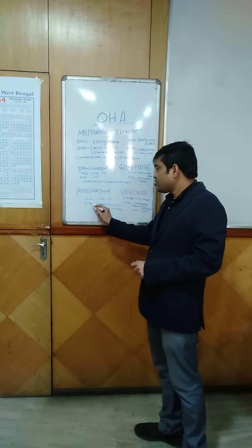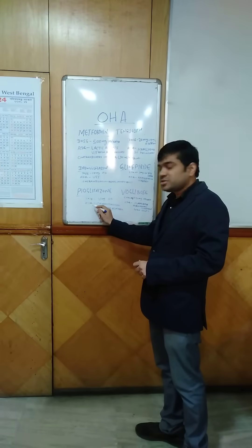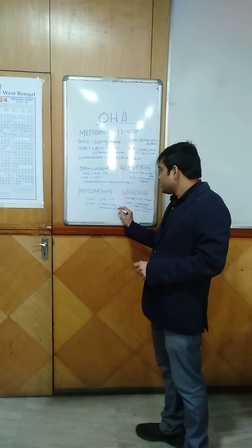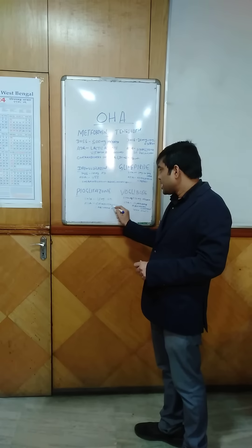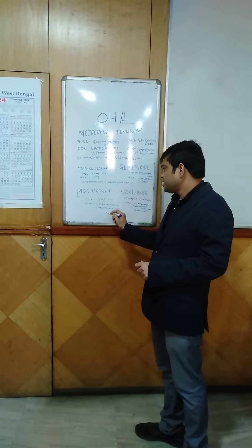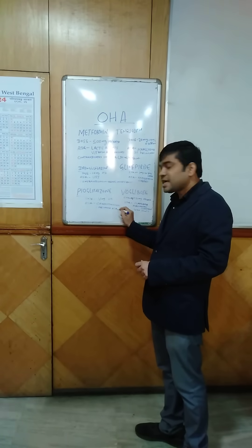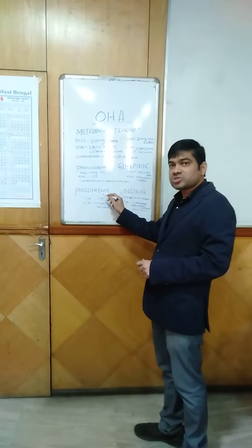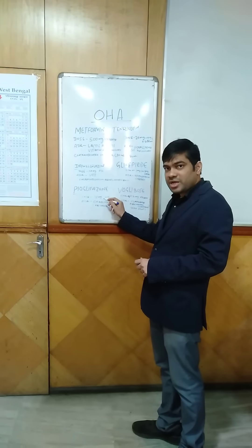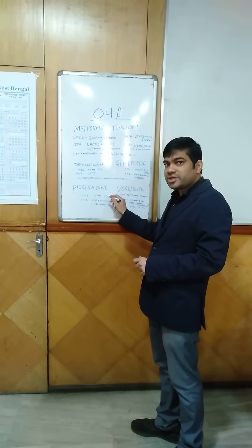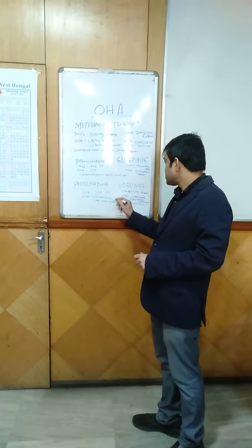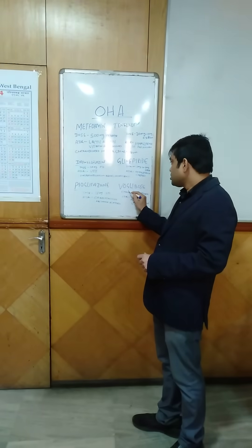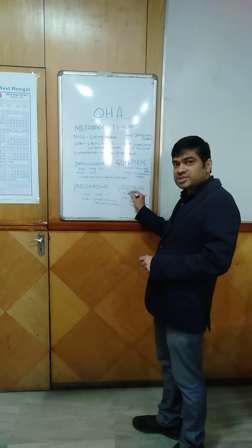Coming to the next drug, pioglitazone. The dose is 15mg OD after food. The adverse drug reactions may be cardiotoxicity and bladder cancer. We should be cautious in using pioglitazone in hepatic impairment.